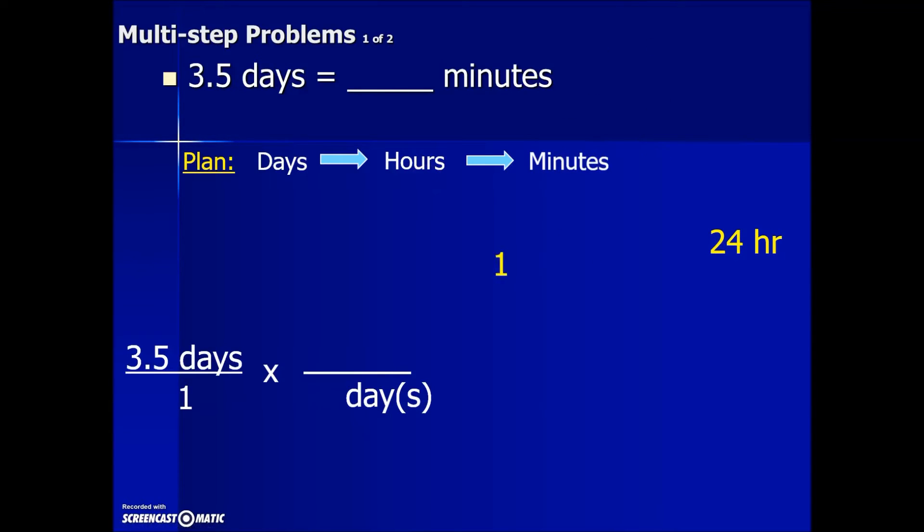Our plan was to convert first days into hours. Plugging that information in, we have one day equivalent to 24 hours, and here's our conversion factor fraction arrangement so that the days are going to cancel out. Before you pick up your calculator to simplify this fraction, lay out the remaining conversion step so that we can do this all in one calculation.